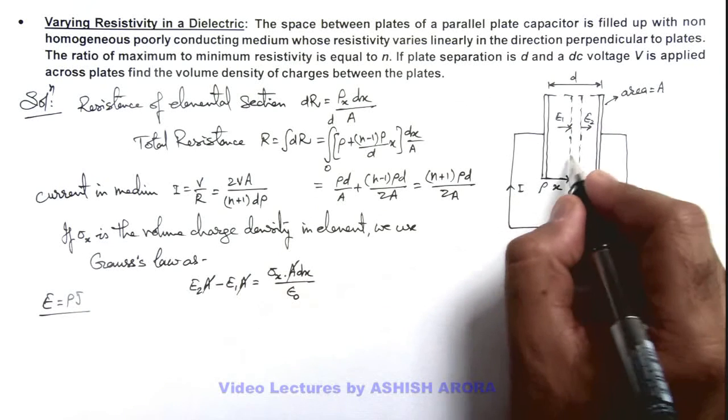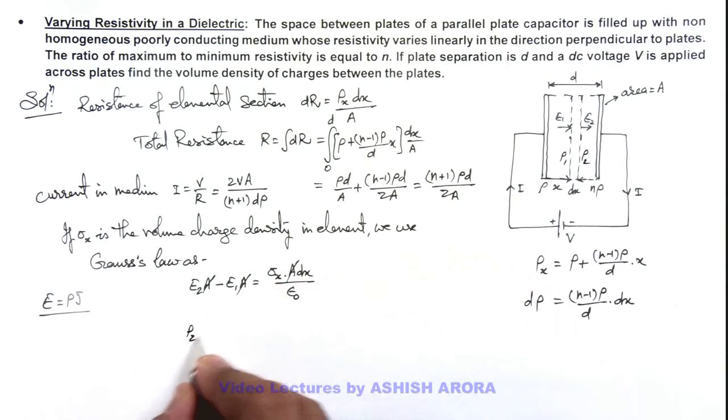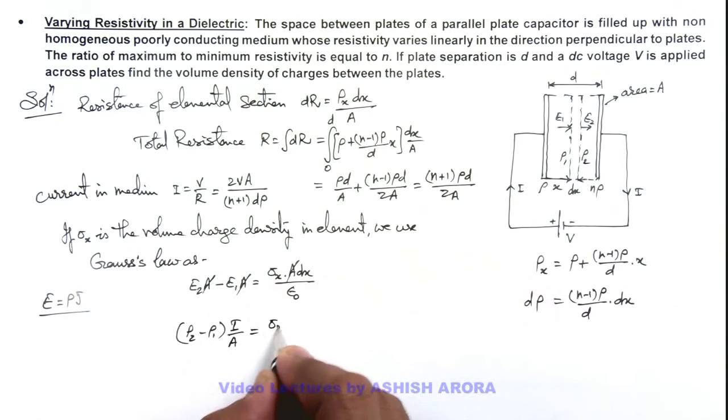And electric field we can write as ρJ where ρ is the resistivity and J is the current density. So if here resistivity is ρ₁, here resistivity is ρ₂, we can write it as ρ₂ minus ρ₁ multiplied by i/A, is equal to σₓdx/ε₀.